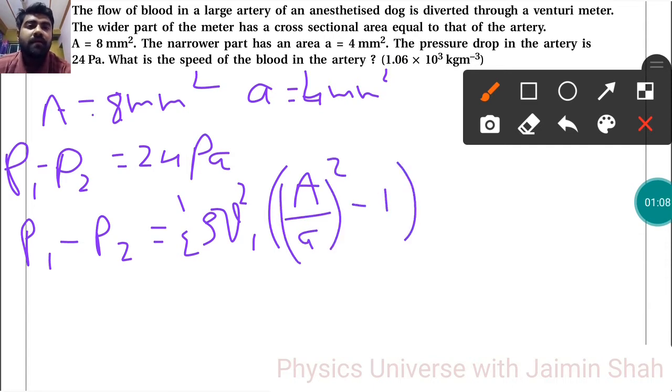Now V1 means the speed that we have to find. So 2 times P1 minus P2, upon rho, times A upon a whole squared minus 1, equals V1 squared on the right-hand side.